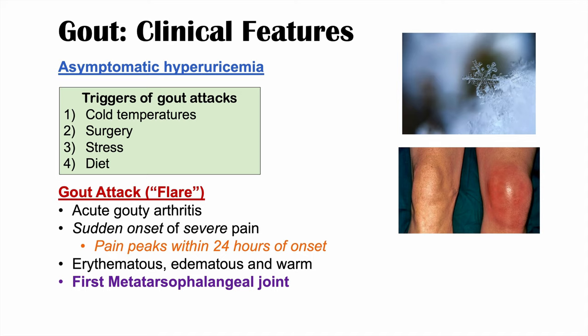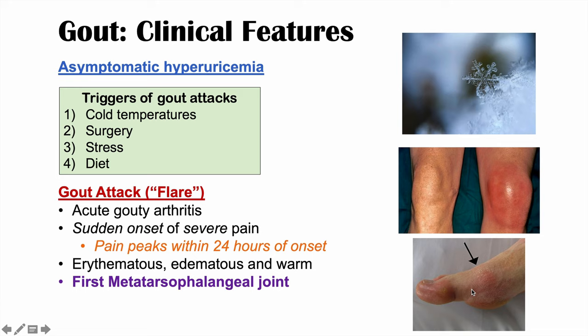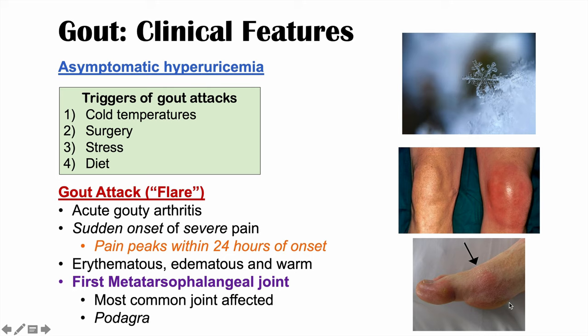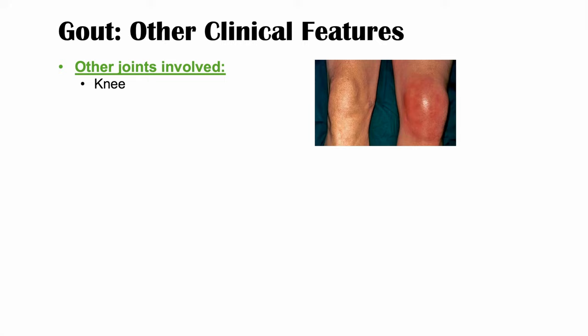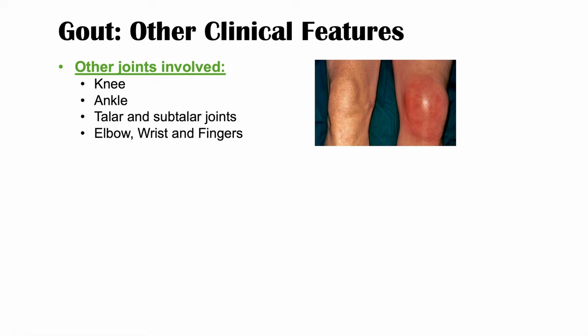The most common joint affected in gout is the first metatarsophalangeal joint — the big toe, the first MTP. When this joint is affected, we have a special term: podagra. Other joints that can be affected include the knee, ankles, talar and subtalar joints, and the elbow, wrist, and fingers. So while many joints can be affected, the first MTP is most common.